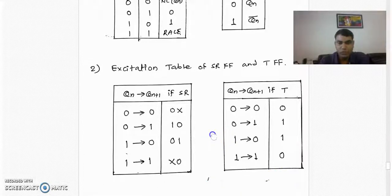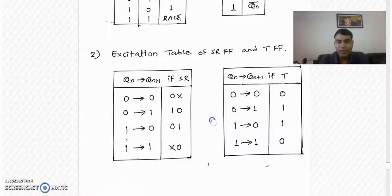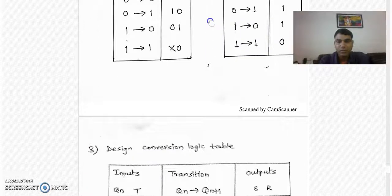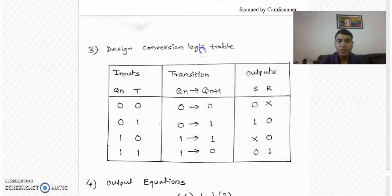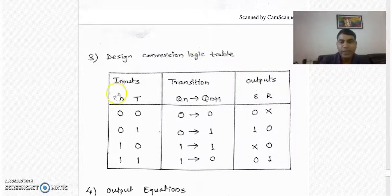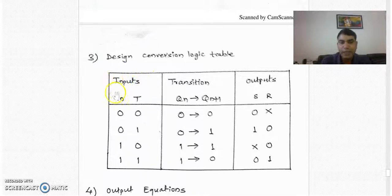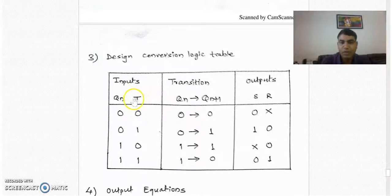Now the next job is to design a conversion logic table so that the SR flip-flop can behave like the target T flip-flop. The conversion logic table has three columns: input, transition, and output. The inputs are always a standard input Qn and the inputs of the target flip-flop. In our example, the target flip-flop is T flip-flop, so there is only one input T. For two variables, there are four possibilities: 0-0, 0-1, 1-0, and 1-1.